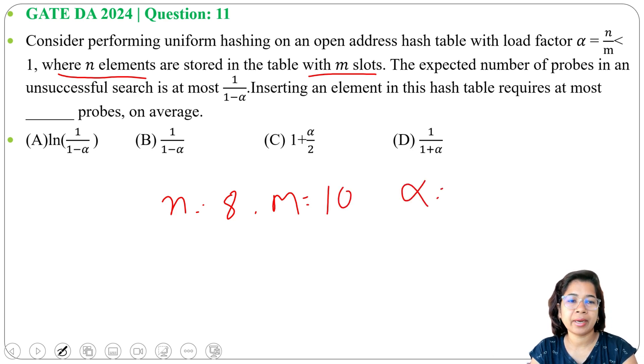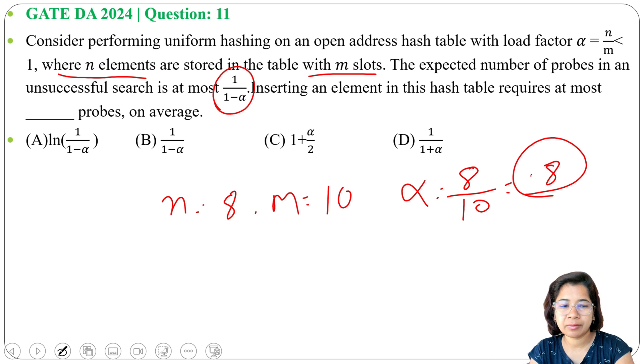Now what is alpha? Alpha is the load factor for each slot. Now n divide m means 8 divide 10, it will be 0.8. 0.8 is less than 1. And for unsuccessful search at most we require 1 divide 1 minus alpha.